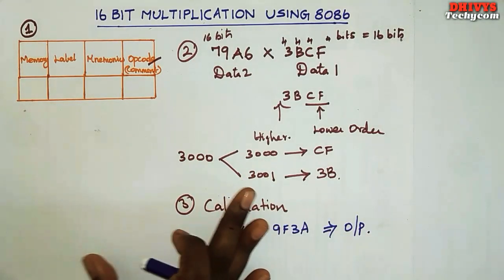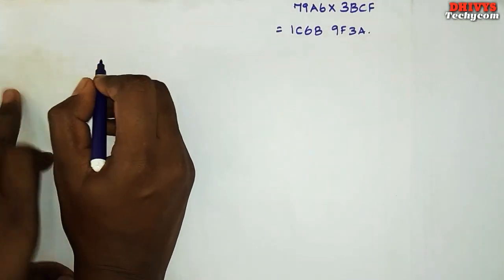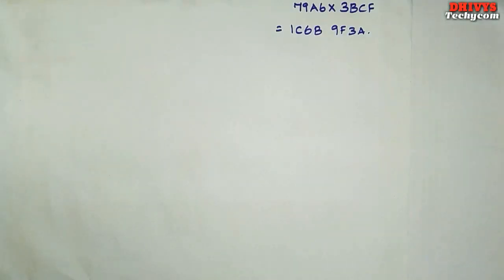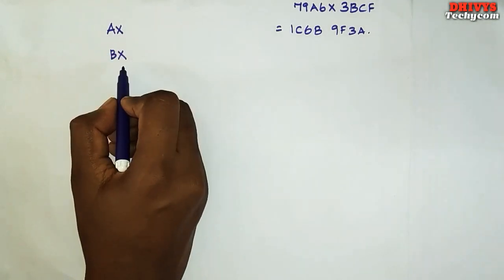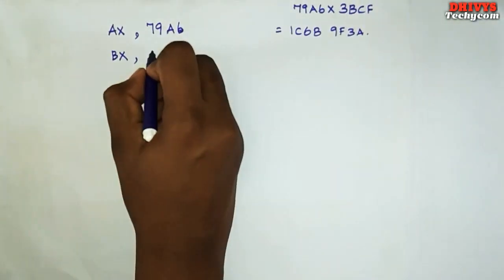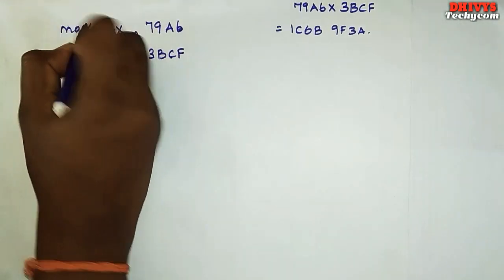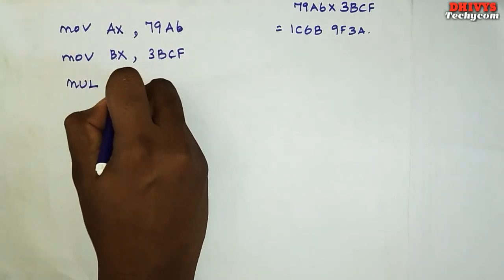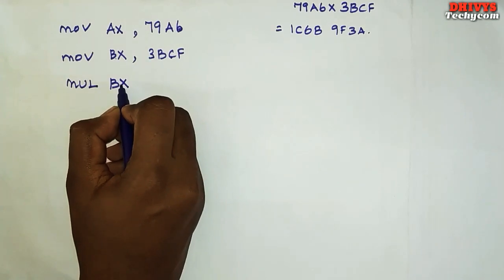This is a reference for the 8086 program. In the data we move to AX and in the data we move to BX. You can move here. We perform multiplication — MUL BX. In this case the AX is mentioned. It is used for multiplication and division. Now we do multiply. How do we store it? We store it in the accumulator.